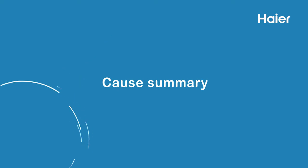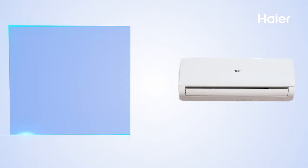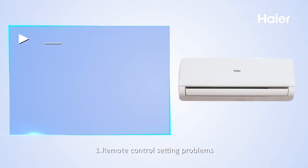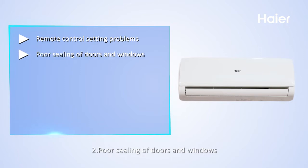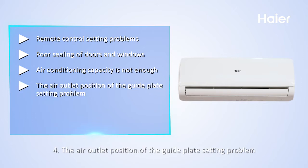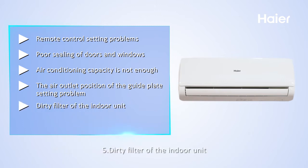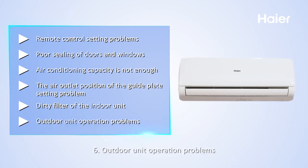Cause summary. Poor heating may be caused by the following reasons: 1. Remote control setting problems. 2. Poor sealing of doors and windows. 3. Air conditioning capacity is not enough. 4. Air outlet position or guide plate setting problems. 5. Dirty filter of the indoor unit. 6. Outdoor unit operation problems.